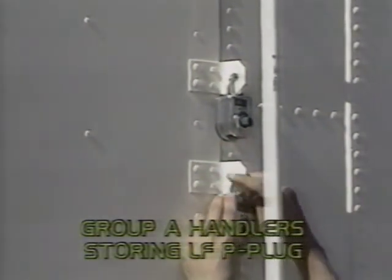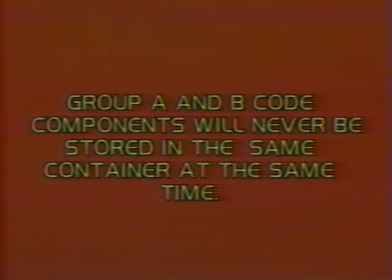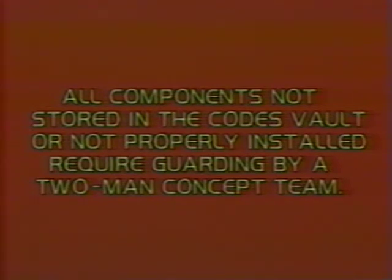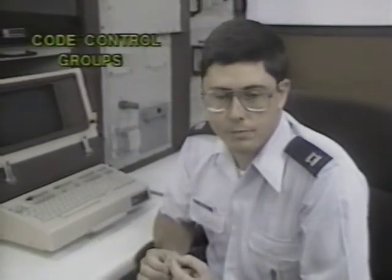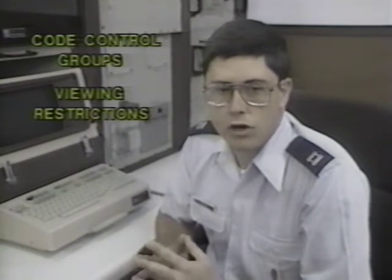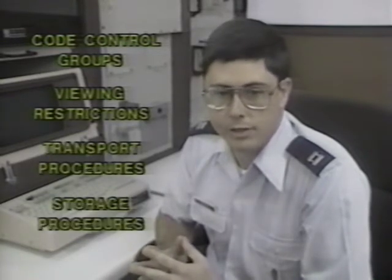Two very important points about storage are: Group A and Group B code components will never be stored in the same container at the same time. And all code components not stored in the code's vault or not properly installed require guarding by a two-man concept team. So far, we have defined split handling requirements and complementary components, and discussed the concepts of code control groups, viewing restrictions, transport procedures, and storage procedures.